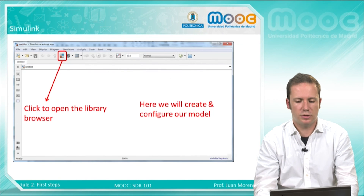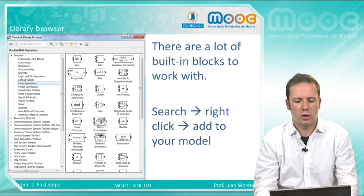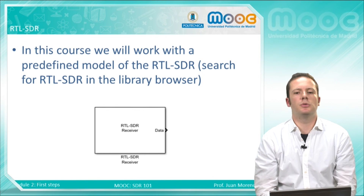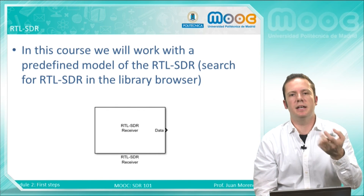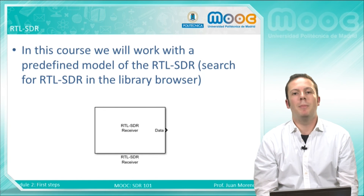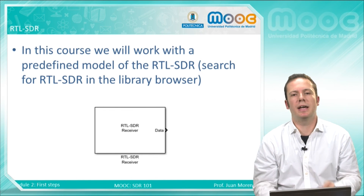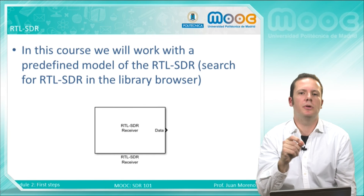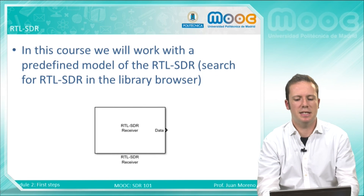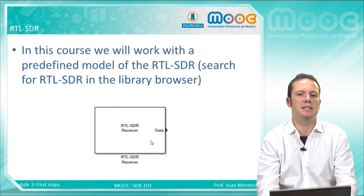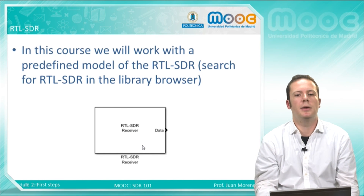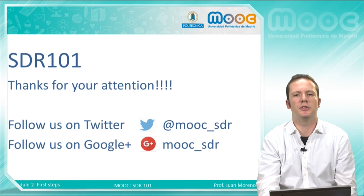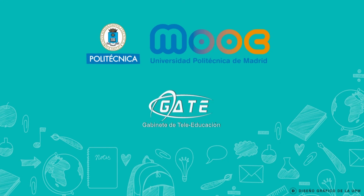Here you can see everything that we have covered. Finally, in this course we will work with the RTL-SDR hardware. MATLAB and Simulink allow us to encapsulate the RTL as a black box and configure only some parameters. In Simulink, we will have the RTL-SDR receiver as a block and we will change some parameters of it. We will see this in the following videos. Thank you for your attention.